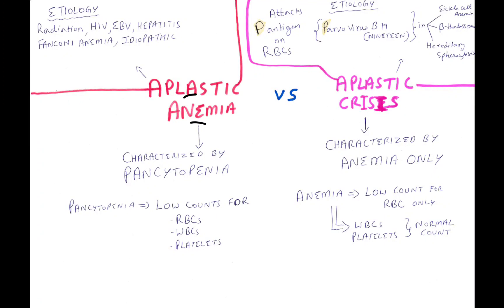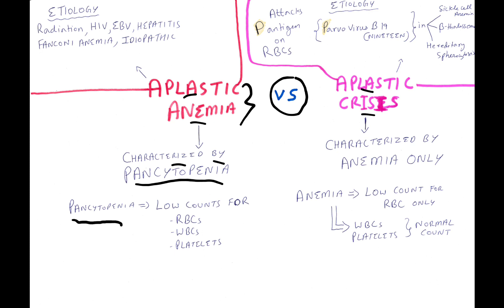Aplastic anemia vs. aplastic crisis. What is aplastic anemia? Aplastic anemia is characterized by pancytopenia. What is pancytopenia? Pancytopenia is low blood counts for RBCs, WBCs, and platelets.